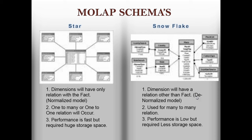Regarding star schema, the dimension tables are denormalized. The normalized model shown is how tables are connected before building the schema; when you build a complete schema, that schema becomes a denormalized view. Tables are connected to each other to form a denormalized schema whose output gives a single result.